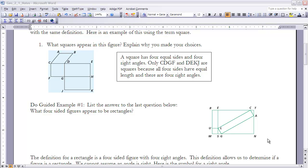We'll get into the definitions of all of those types of figures a little bit later on in this course. At this time, if you could just take a few minutes and make sure you get the answer down to that example number one. If you could just take a few minutes now to do the guided example one in your book. And then in this area down here, if you could list the answer to the last question below, what four sided figures appear to be rectangles. And then we'll go over that in just a minute.